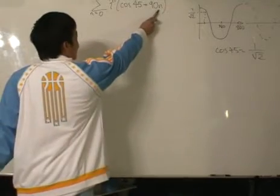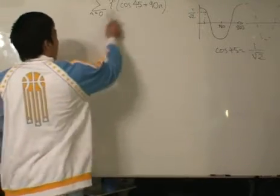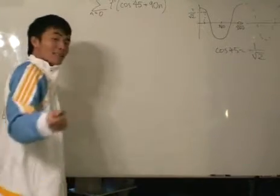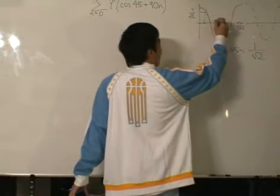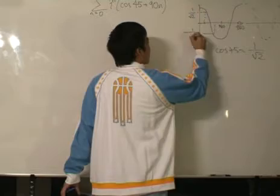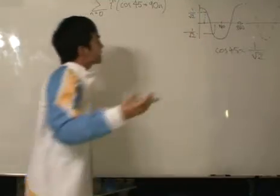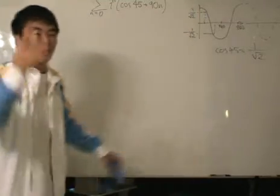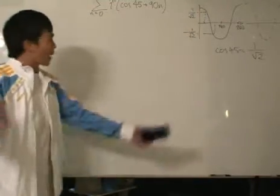So later, when we plus 90, because we started out with n equals to 0, so later when we plus 90, we will go over here on this side. And what do we know, down here, it's negative 1 over root 2. Basic symmetry of the graph, or if you want to do the quadrant method, by all means.